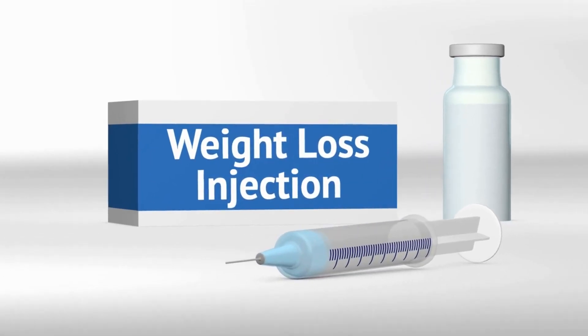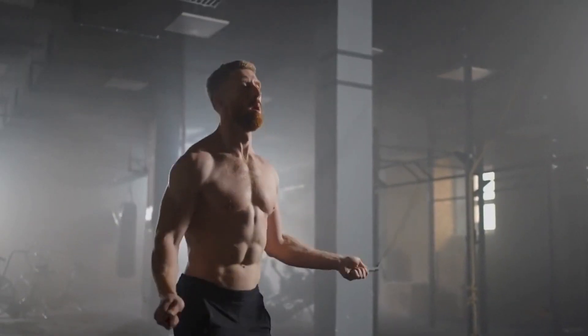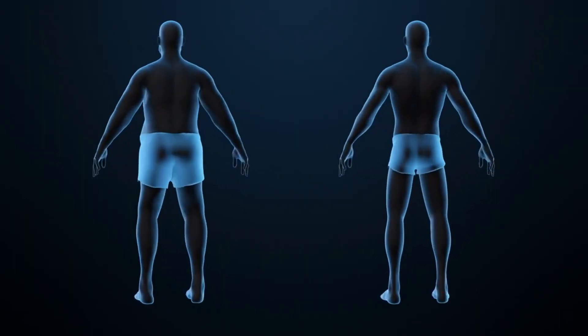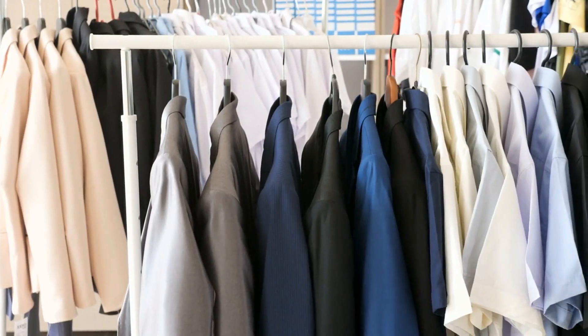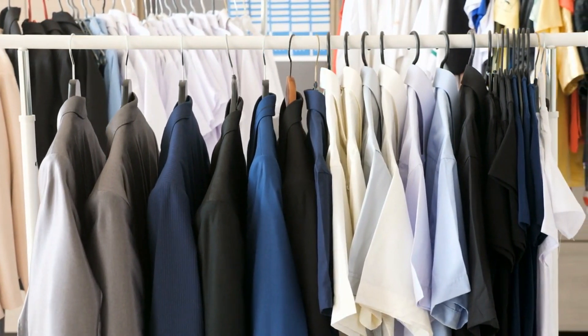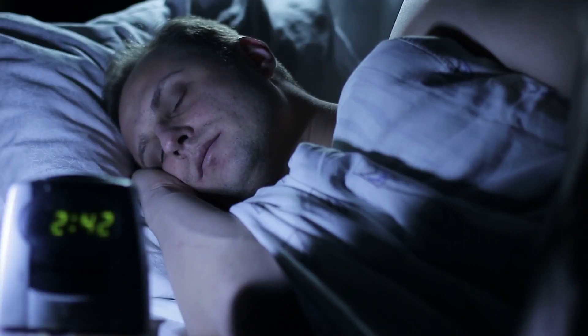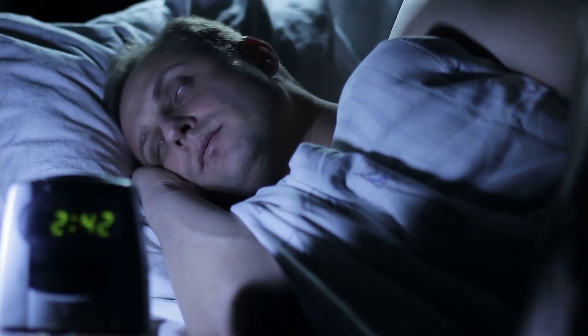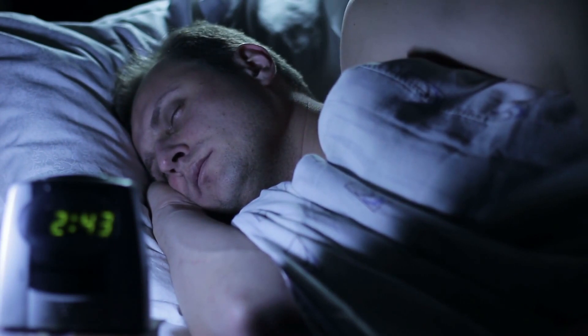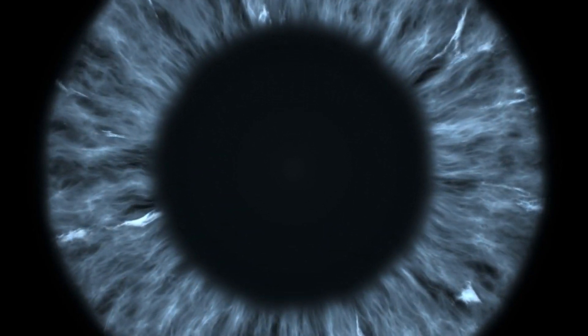Another symptom to be aware of is unexplained weight loss. We're not talking about shedding a few pounds after hitting the gym — we're talking about significant weight loss without any changes to your diet or exercise routine. If you notice your clothes fitting looser and the numbers on the scale dropping unexpectedly, it's definitely worth investigating further. Feeling constantly fatigued and lacking energy can also be a sign of diabetes, as can increased hunger and blurry vision.